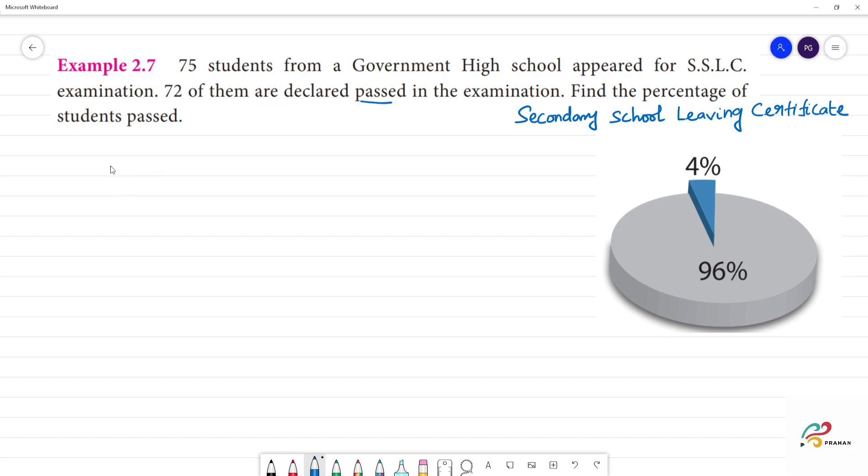If we look at total number of students, total students: 75 students, total students. If we look at passed students: 72 students.